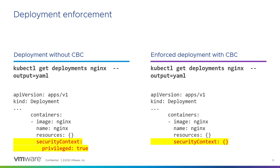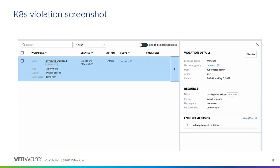Example of the same application deployed without Carbon Black: when you get the deployment from your Kubernetes cluster, you will see that your pod is running with privilege set to true. But if you deployed using Carbon Black with an enforcement policy to block the privilege, the application will still run, but with security context there will be no privilege. Each time Carbon Black modifies a deployment, you will have a log in the Kubernetes violations showing that the deployment has been mutated — changed by Carbon Black.